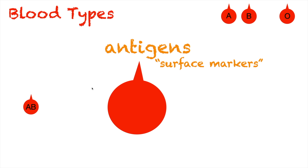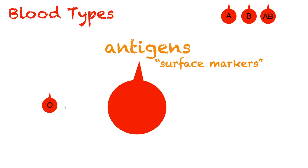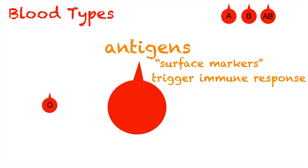Now, if you do not have any antigens on your red blood cell, then you are a type O — we can remember this as zero, meaning you have zero antigens on your red blood cell. That is a type O blood type. So aside from being surface markers, these antigens have another important function: they can trigger an immune response.